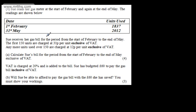Sue receives a gas bill for the period from the start of February to the end of May. The first 150 units are charged at 31p per unit, exclusive of VAT. Any units used over 150 are charged at 12p per unit, exclusive of VAT. In part A, for four marks, we're asked to calculate Sue's bill for this period, exclusive of VAT.